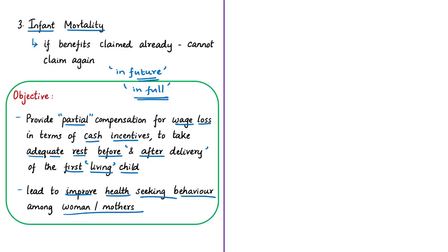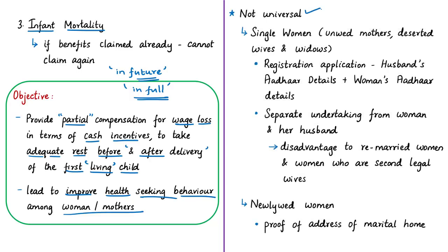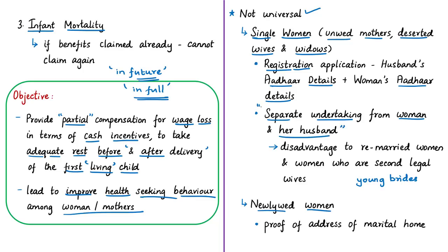The scheme is said to be not universal because it excludes single women, newlywed women, young brides, and other women in need of cash assistance during and after pregnancy. The registration application requires an applicant to provide her husband's details along with her own, meaning single women — including unwed mothers, deserted wives, and widows — cannot avail the benefit. Additionally, the application requires separate undertakings from both the woman and her husband that the child for whom they seek the benefit will be the first living child for both of them, further excluding single mothers.